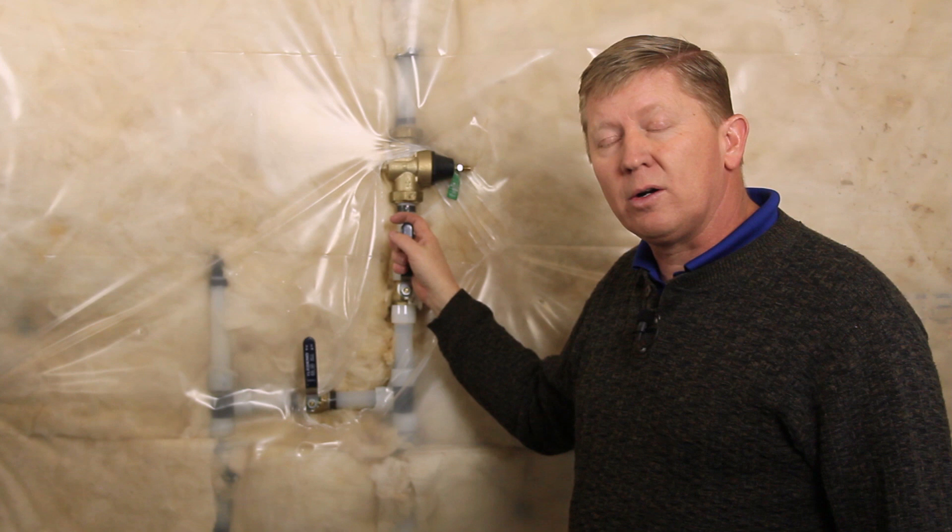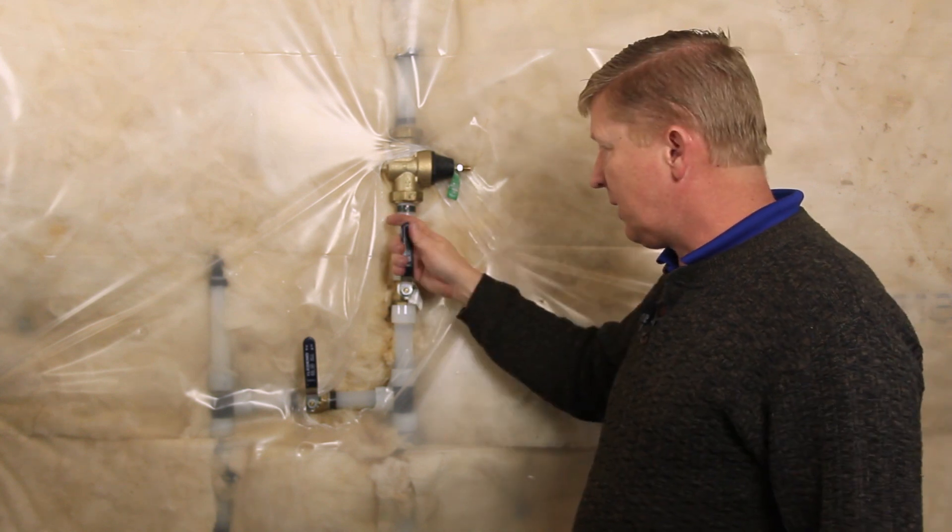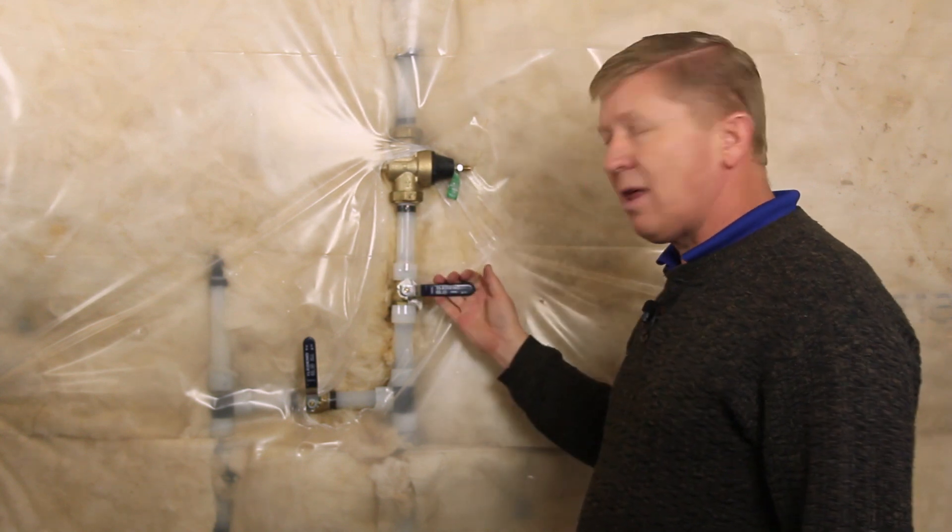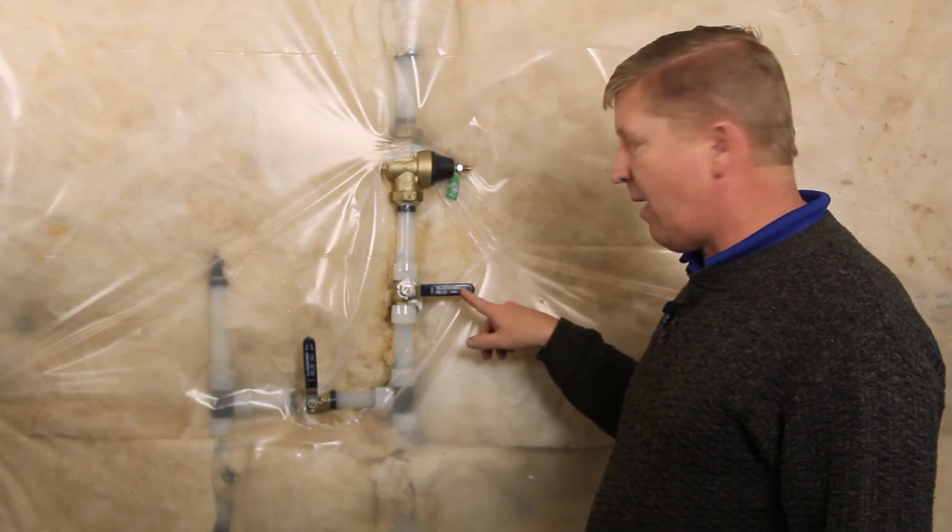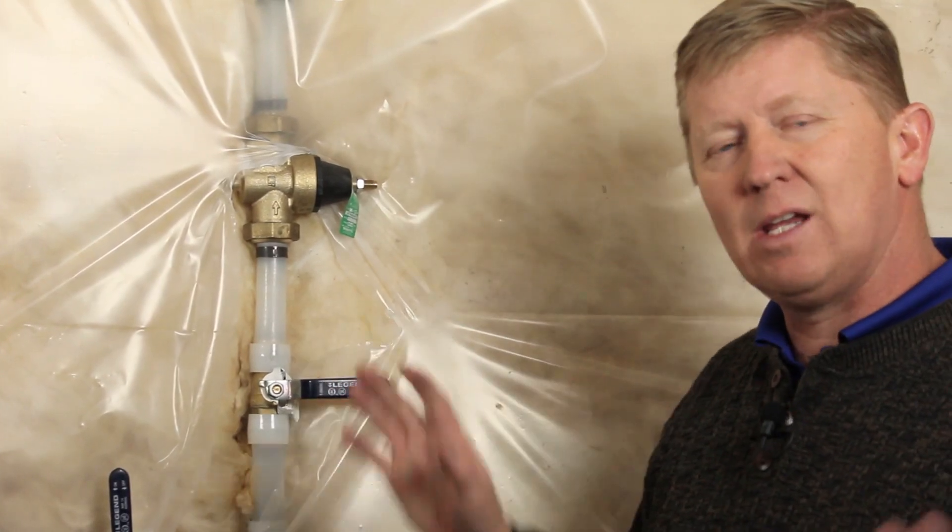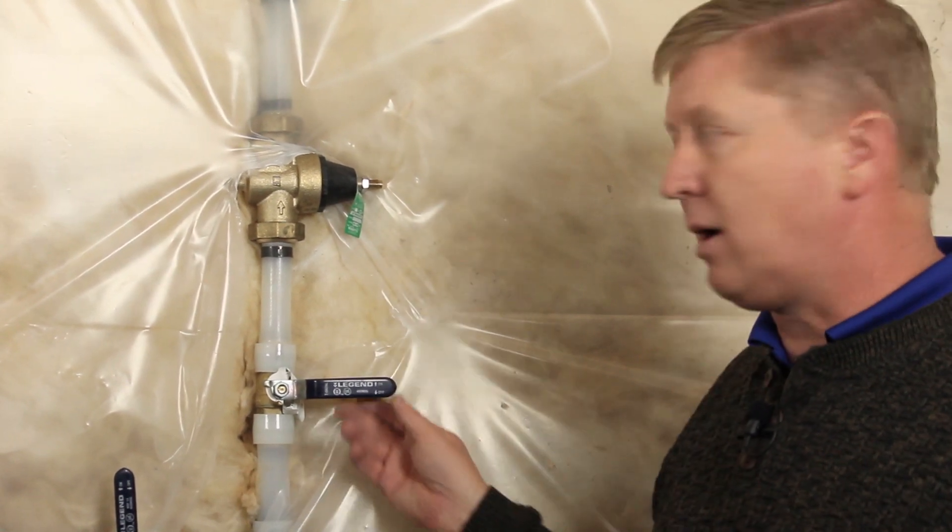If you ever have a water leak inside the house, the best thing to do is to quickly rush to this point. Just like the valves on the gas line, you turn the valve to off. Then you can take care of whatever problems you need to and turn it back on.